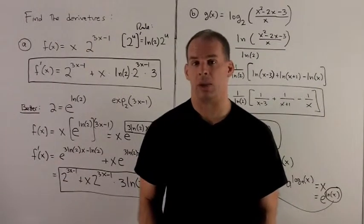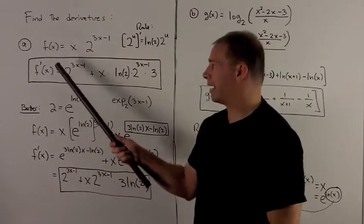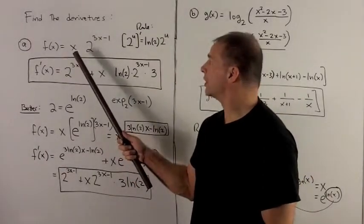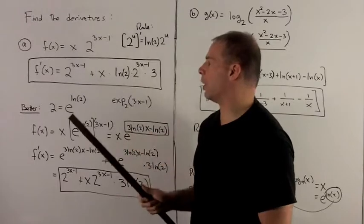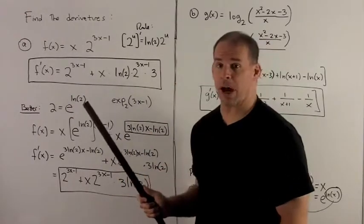I find the derivative of the following functions. For my first function, I have f(x) equal to x times 2 to the 3x minus 1. So I just follow my nose with the product rule.